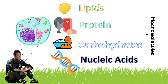What are your cells made of? What kinds of things can your cell make? All of these things are included in four categories: lipids, proteins, carbohydrates, and nucleic acids. For example, your cell membrane is made up of the phospholipid bilayer, which is made up of lipids.